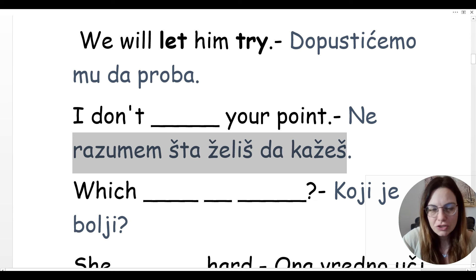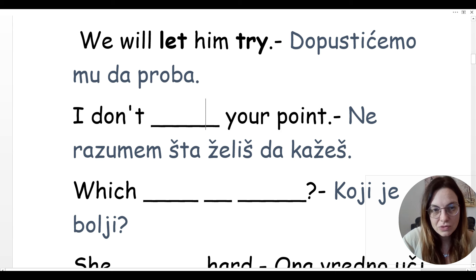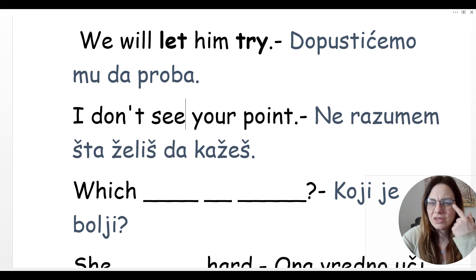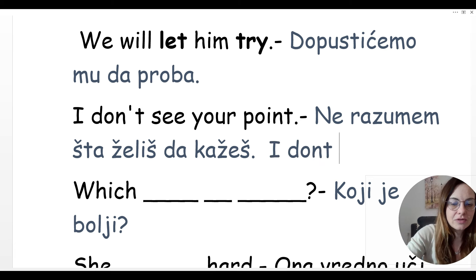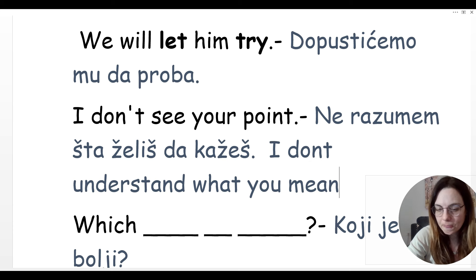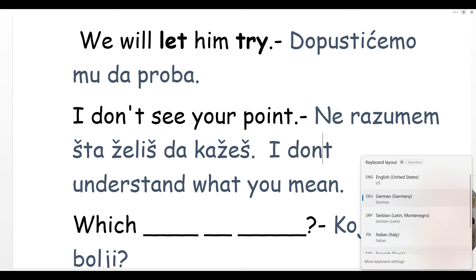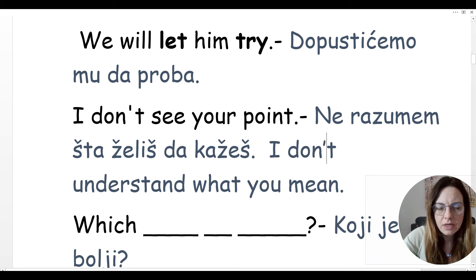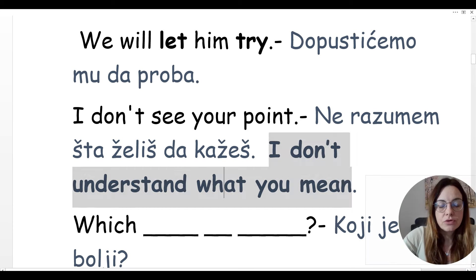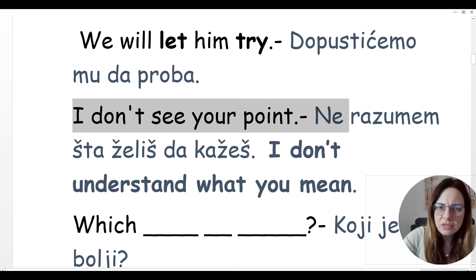Ne razumem što želiš da kažeš — I don't see your point. Koristimo glagol 'see': I don't see your point. Of course we can also say I don't understand, or I don't understand what you mean — ne razumem šta hoćeš da kažeš. I don't understand what you want to say. Or I don't see your point.